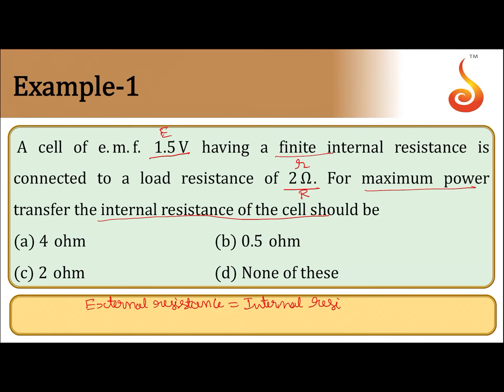That is, capital R should be equal to small r, which implies small r should be equal to, they are given capital R is 2 ohm. So, internal resistance of the cell should be 2 ohm, that is option C.